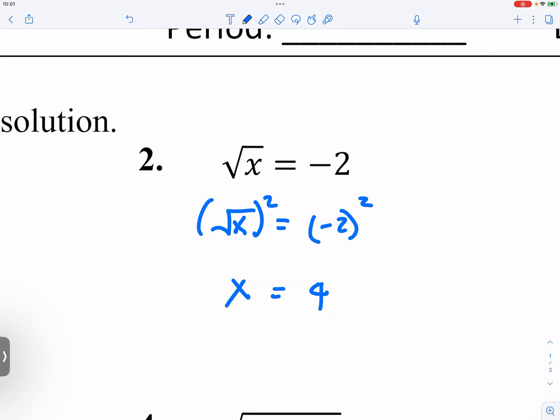Well yeah, it does not produce a true statement. You put the four back in there. Square root of four is two. Two is equal to negative two? That's nonsense.